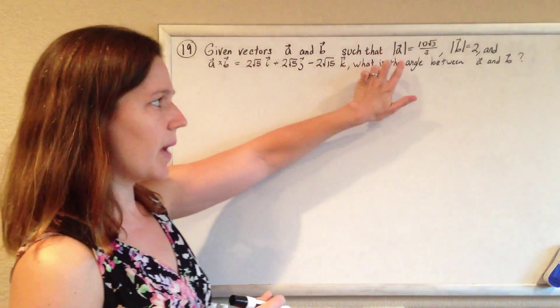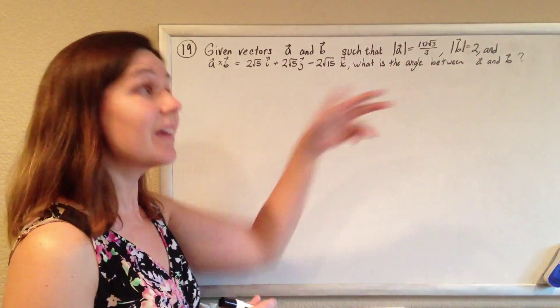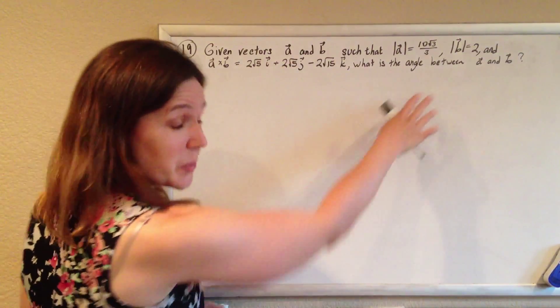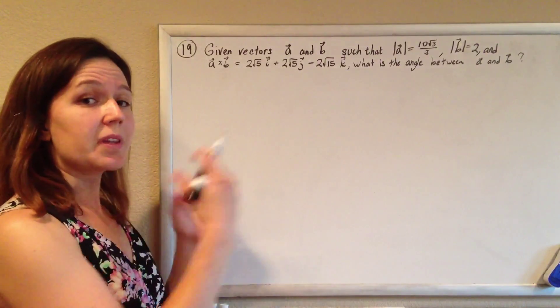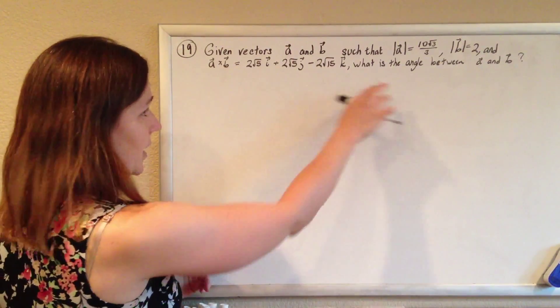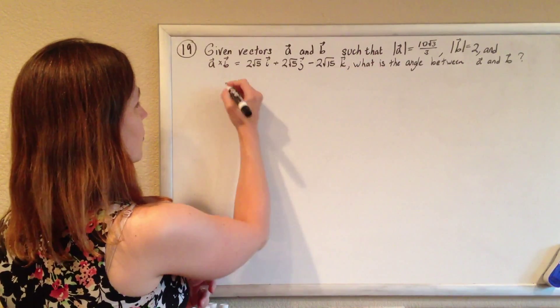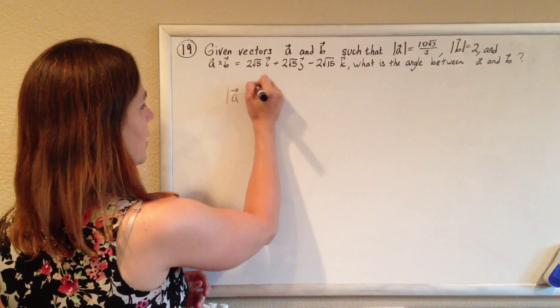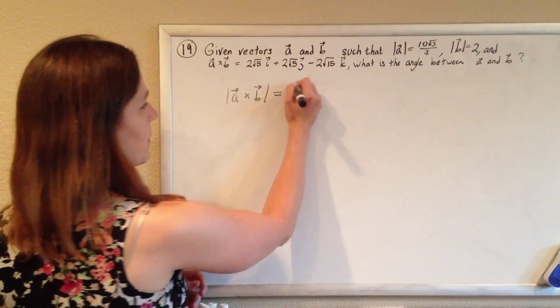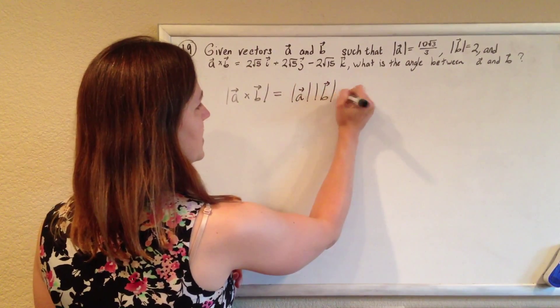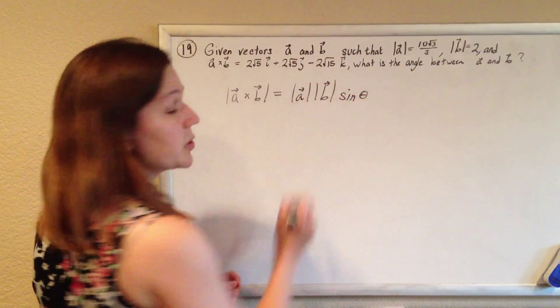We see A cross B and the magnitude of A and the magnitude of B, and we have a formula that has all of those and the angle between A and B. We have a formula that incorporates all of those things. The magnitude of A cross B is equal to the magnitude of A times the magnitude of B times the sine of the angle in between them.